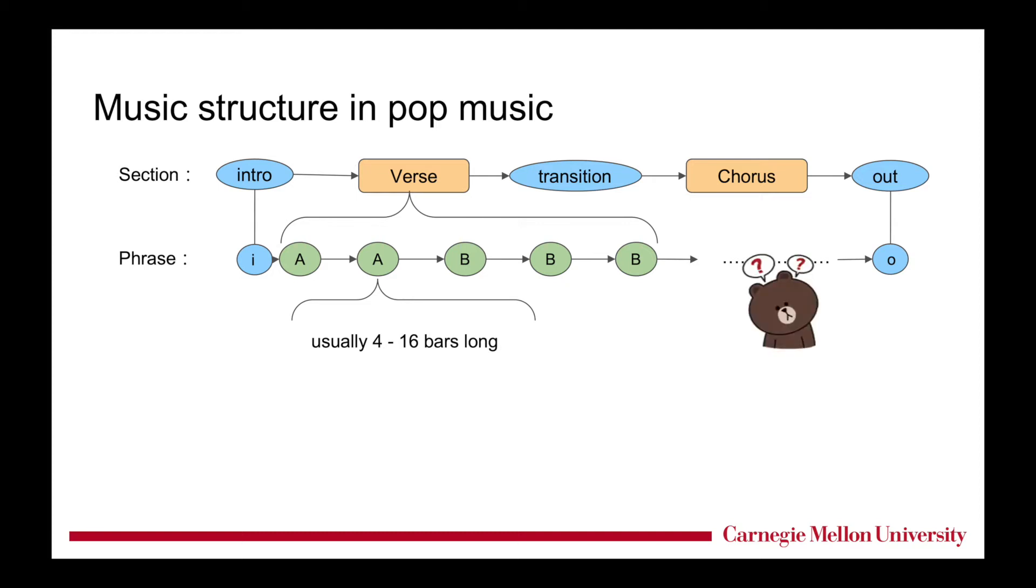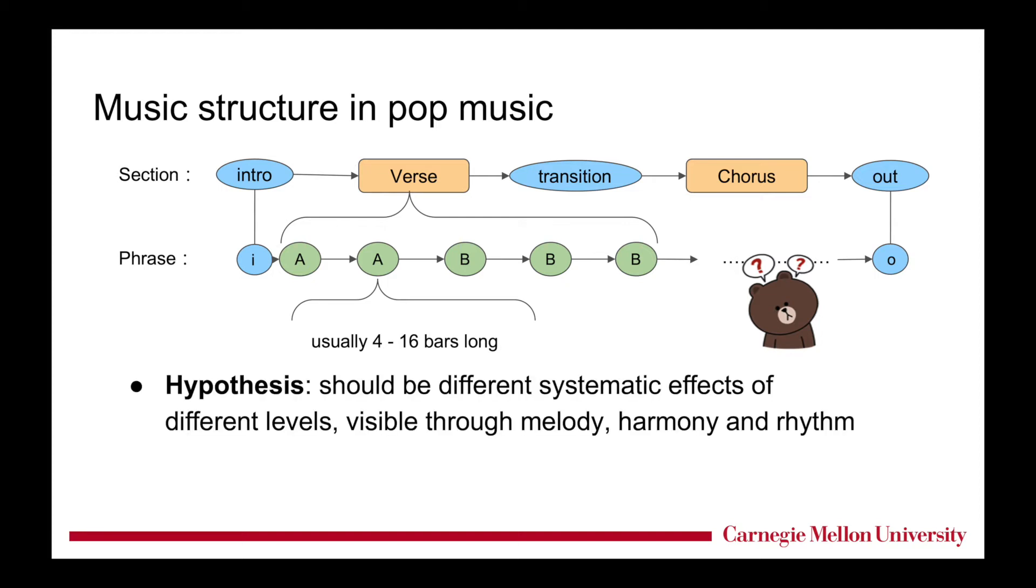So the question is, do these two levels of structure really exist? Are they just larger groupings? We hypothesize that there are different systematic effects of different structure levels that are visible through melody, rhythm, and harmony. If the hypothesis is true, then these two levels really exist and are important for music composition and perception.